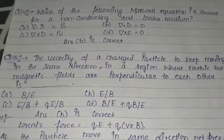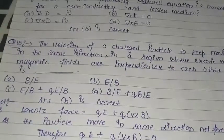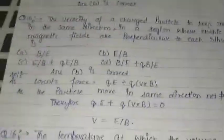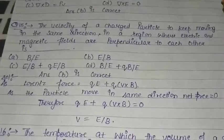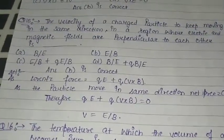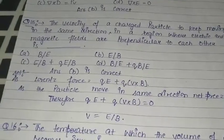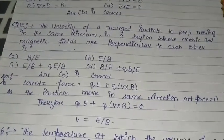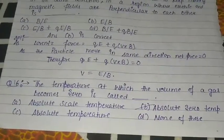Question number fifteen: The velocity of a charged particle to keep moving in the same direction in a region where electric and magnetic fields are perpendicular to each other is — A. B by E, B. E by B, C. E by B plus Q, D. B by E plus Q. Option B is the correct answer. The Lorentz force is Q·E + Q·(V cross B). Setting net force to zero for same-direction motion gives V equal to E by B.